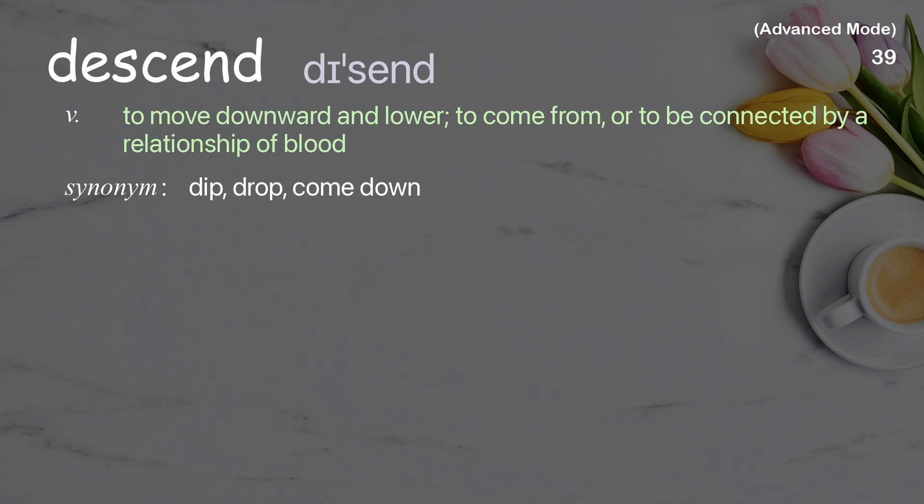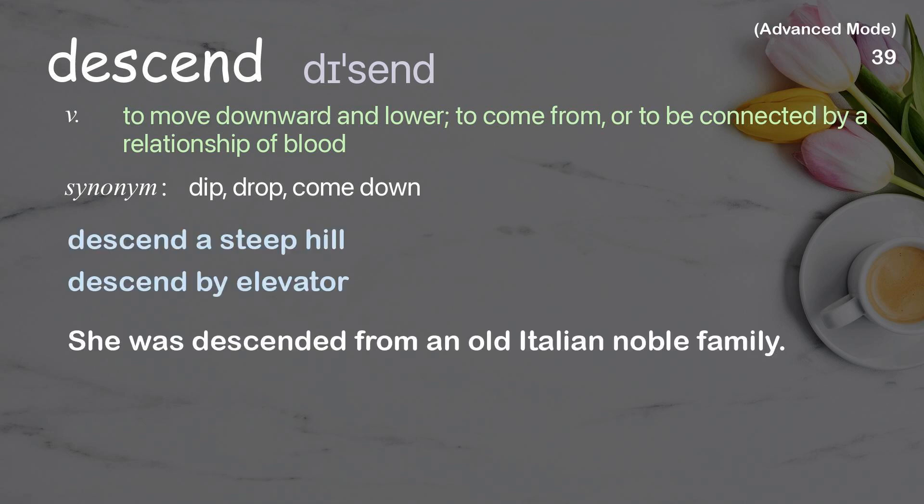Descent: to move downward and lower; to come from or to be connected by a relationship of blood. Examples: descent a steep hill, descent by elevator. She was descended from an old Italian noble family.